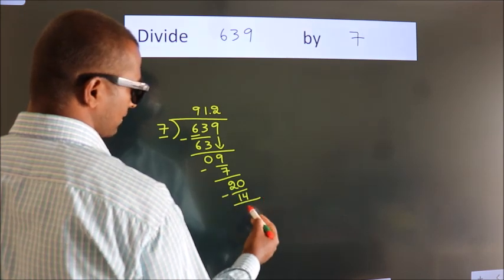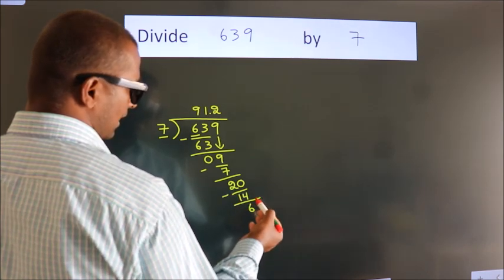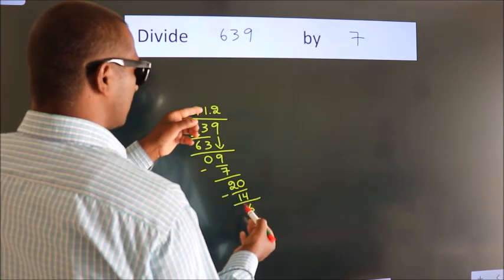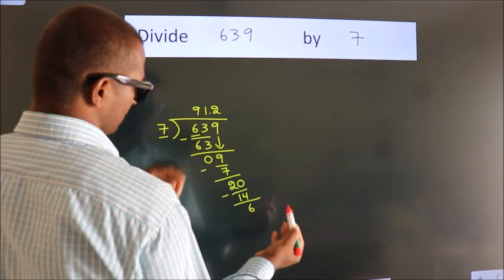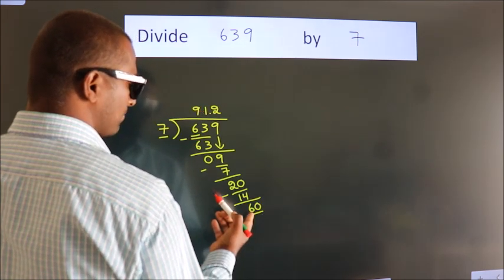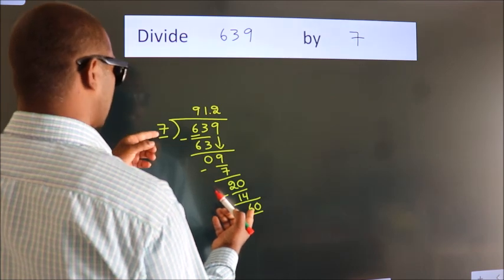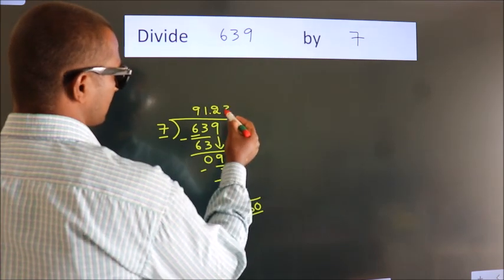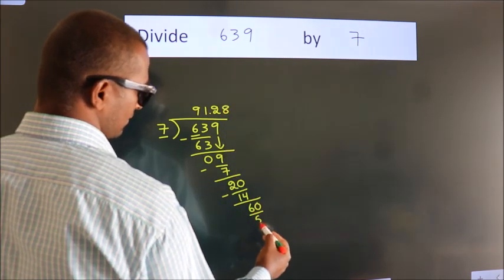Now we subtract. We get 6. After this, we already have the decimal. So directly take 0. So, 60. A number close to 60 in 7 table is 7, 8, 56.